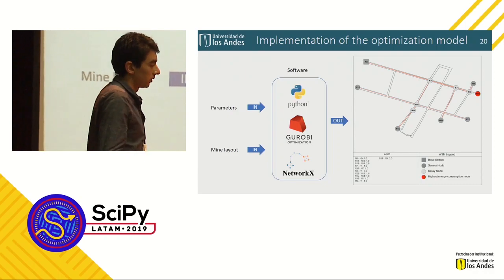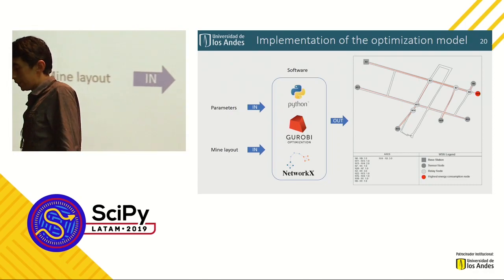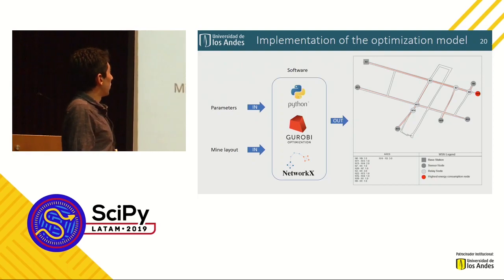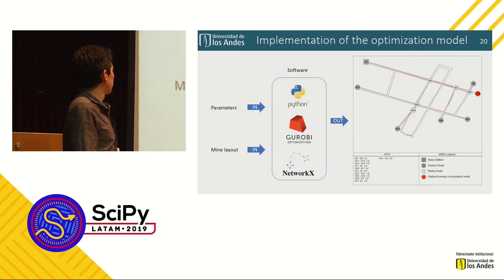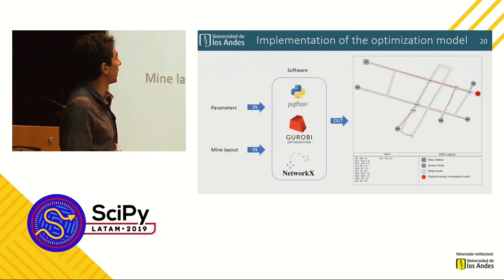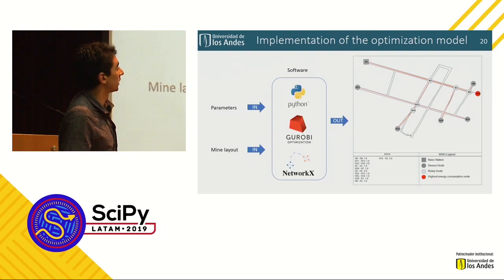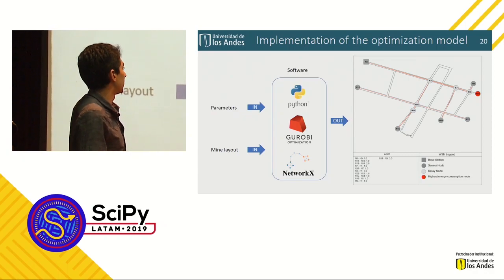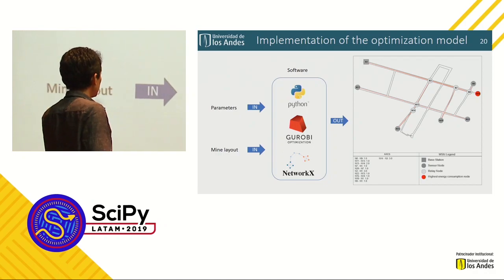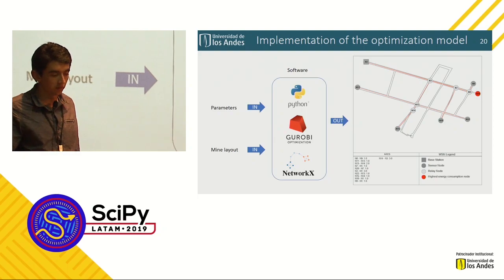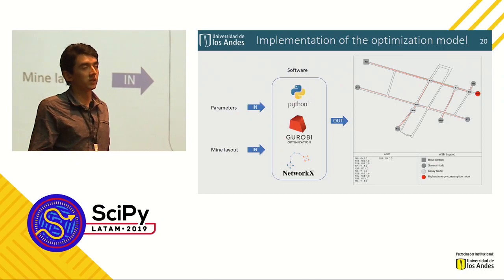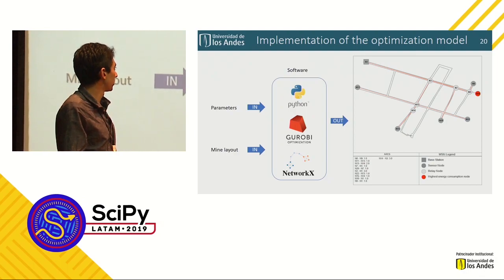For the implementation of our optimization model, we developed software using Python, Gurobi as the optimizer, and NetworkX for managing graphs. Our software takes several input parameters including the desired lifetime and an image with the mine layout. The output is an image showing the wireless sensor network represented in the layout, the number and location of each node in the mine, and a table with information about communication between nodes.